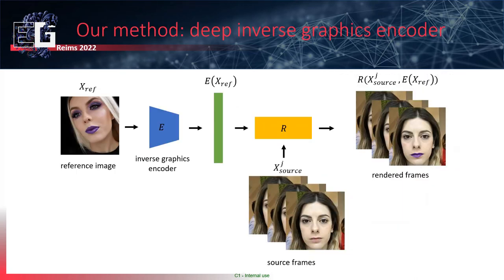Our method is based on a deep inverse graphic encoder that, given a reference image, predicts the cosmetic parameters. These cosmetic parameters and a source image are given to the renderer, which generates the source image with the relevant makeup applied. It is worth noting that the renderer here is a black box and its inner workings need not be known to us.